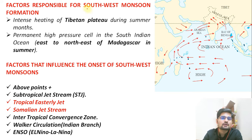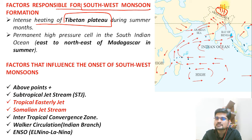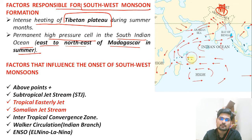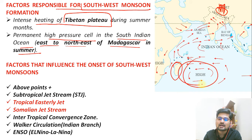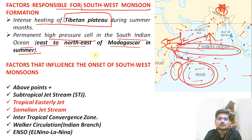Now let's talk about the factors responsible, point-wise. The first factor for Southwest monsoon creation is the intense heating of the Tibetan Plateau. This air rises up and creates a low-pressure/high-pressure system. The second factor is the permanent high-pressure cell in the southern Indian Ocean, east to northeast of Madagascar, during summers. From this high-pressure area the winds start flowing, joined by the Somali jet or the cross-equatorial jet. The ITCZ is also shifting northward in the summers.